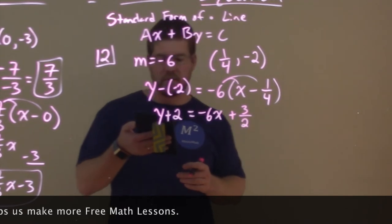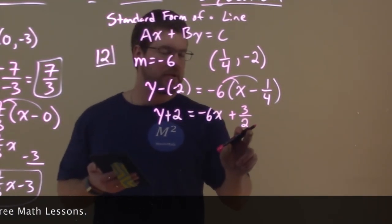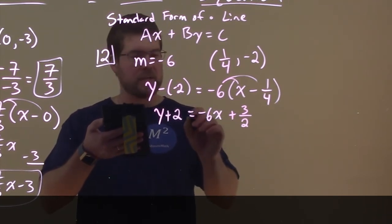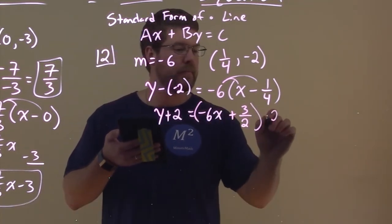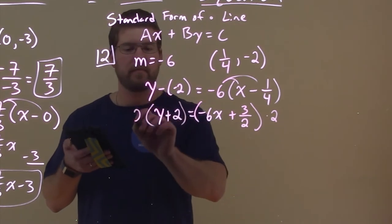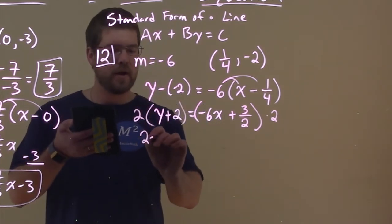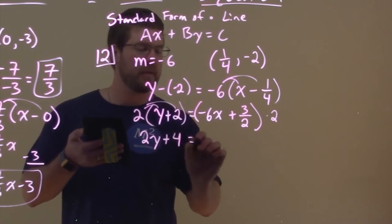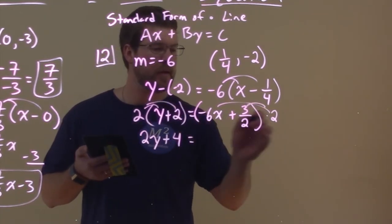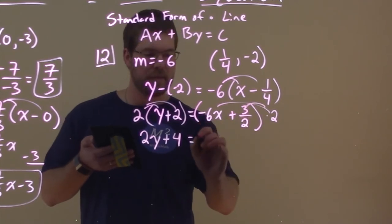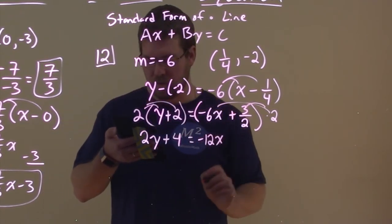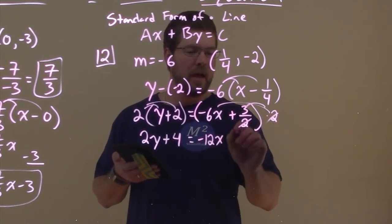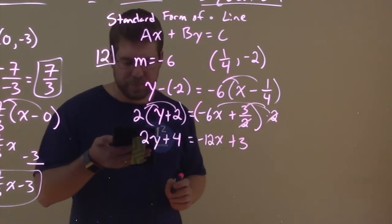So now what do we need to do? Well, I don't want to have a denominator, a rational fraction there, right? So I want to multiply both sides here by 2. And that gives me here 2Y plus 2 times 2, which is 4. And distribute the 2 over here, negative 6 times 2, or 6X times 2 is a negative 12X. And then now the 1 half has kind of cancelled there, and we're left with just a plus 3.